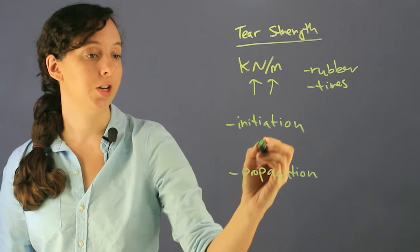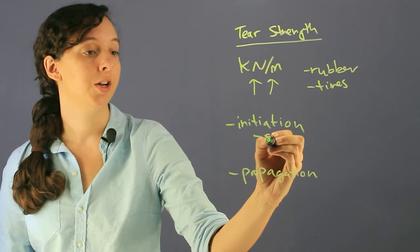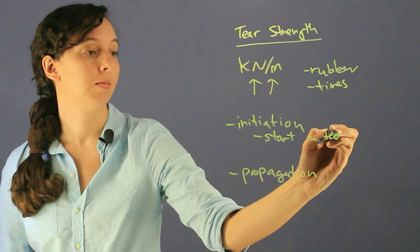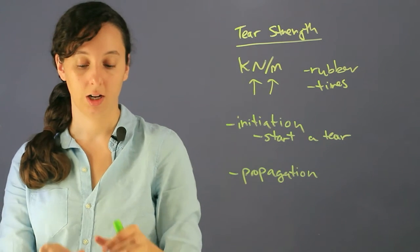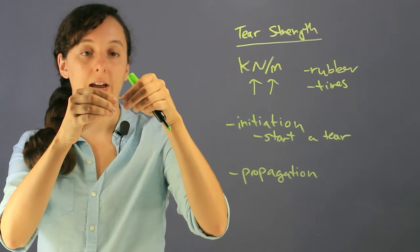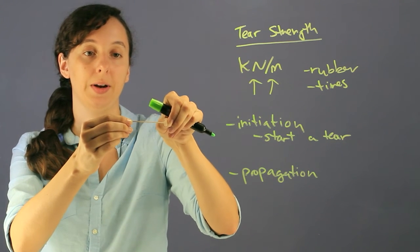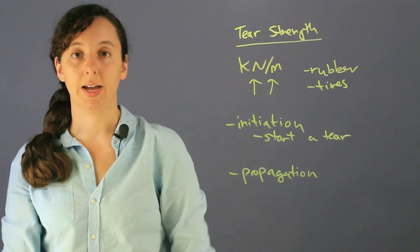As you might imagine, initiation is the energy required to start a tear. If I have a rubber band with no tears and I pull it and pull it, eventually it'll rip. That's the initiation tear strength.